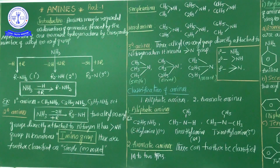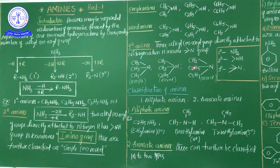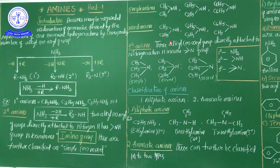In mixed tertiary amines, the three alkyl groups need not all be the same. For example, if two groups are methyl and one is ethyl, it is a mixed tertiary amine. If all three groups — methyl, ethyl, and propyl — are completely different, it is also a mixed tertiary amine. Most important key point: simple and mixed amines exist only in two-degree and three-degree amines, not in one-degree amines.